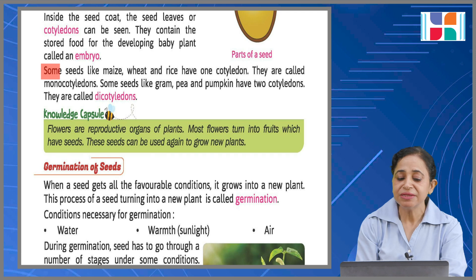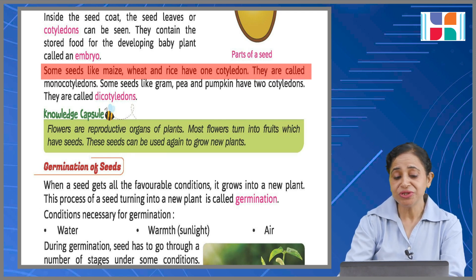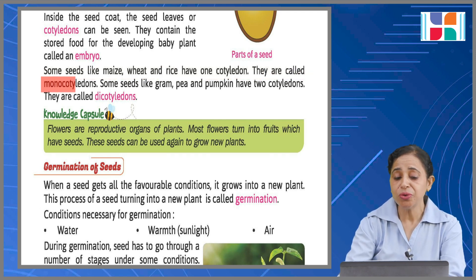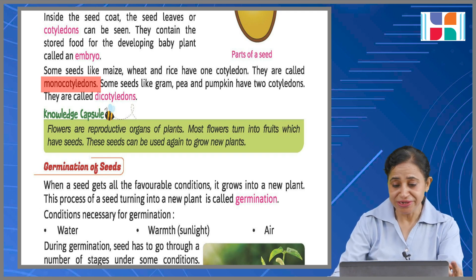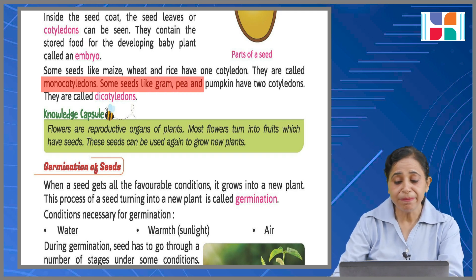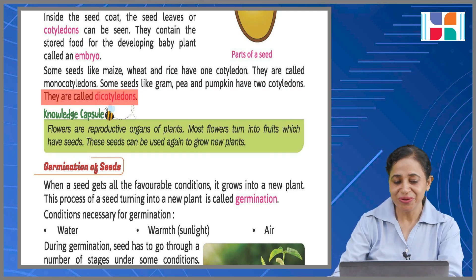Some seeds like maize, wheat, and rice have one cotyledon and they are called monocotyledons. Some seeds like gram, pea, and pumpkin have two cotyledons and they are called dicotyledons. Knowledge capsule: flowers are reproductive organs of plants, and most flowers turn into fruits which have seeds. These seeds can be used again to grow new plants.